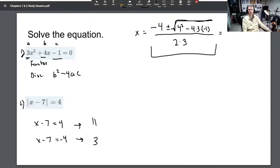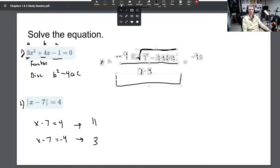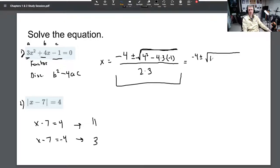This is negative 4 plus or minus. Sorry, I'm going to shift this down. Okay. Negative 4 plus or minus the square root of 16 plus 12 over 6. What is that number? I don't know. It's negative 4 plus or minus the square root of 28 all over 6. You could simplify that a little bit more. The square root of 28 is 2 times the square root of 7.